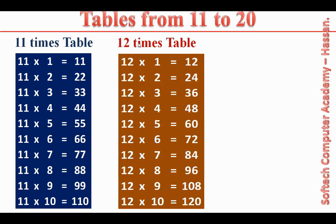12 times table. 12 ones are 12. 12 twos are 24. 12 threes are 36. 12 fours are 48. 12 fives are 60. 12 sixes are 72. 12 sevens are 84. 12 eights are 96. 12 nines are 108. 12 tens are 120.